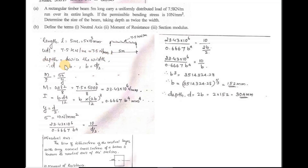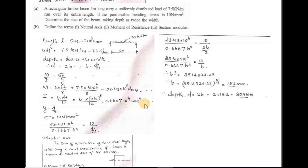The depth condition is D = 2B. Using the bending equation M/I = σ/y, and for a simply supported beam with UDL, M = wL²/8. The moment of inertia for the rectangular section with D = 2B substituted gives I = 0.6667 B⁴ mm⁴.